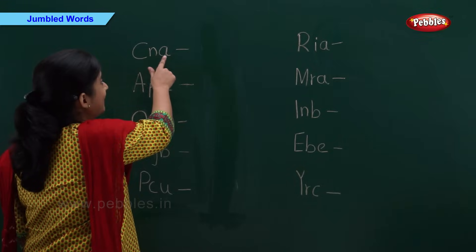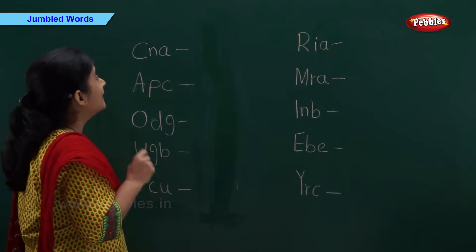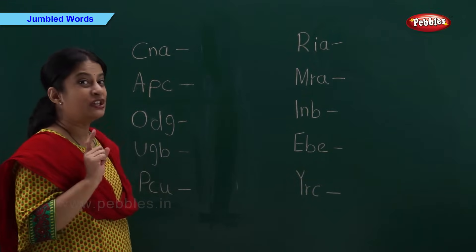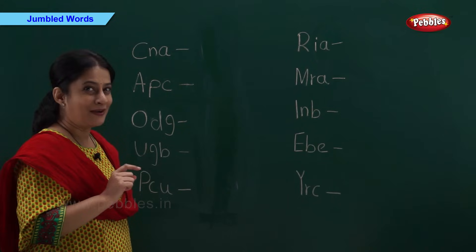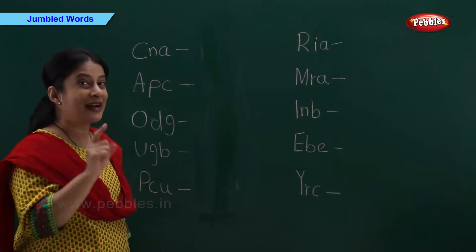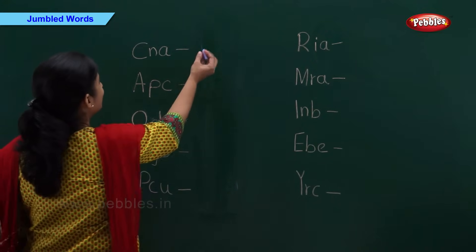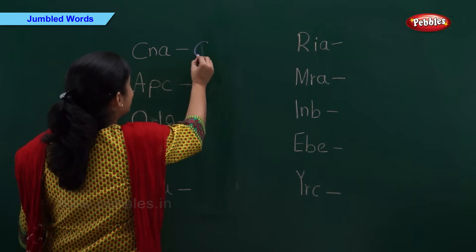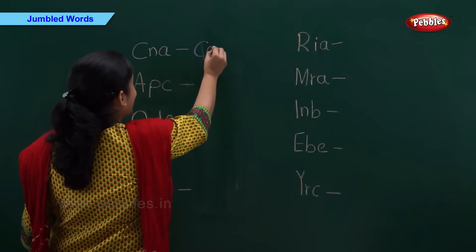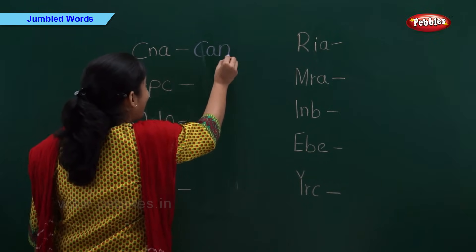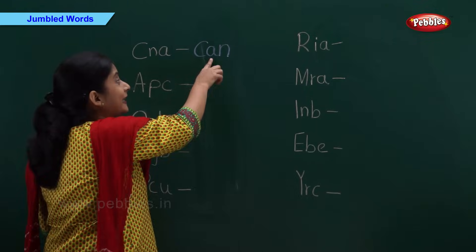C-N-A. C-N-A is a jumbled word and now let's find out the correct word. C-A-N. Can.